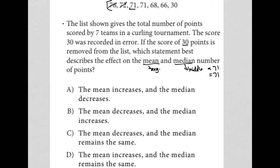For the average, I go to my calculator. I have seven numbers to start off with, so I'm going to add up all those numbers: 76 plus 72 plus 71 plus 71 plus 68 plus 66 plus 30, and I divide that by seven because that's how I find an average. My average starts out at 64.85.